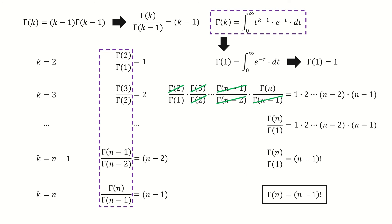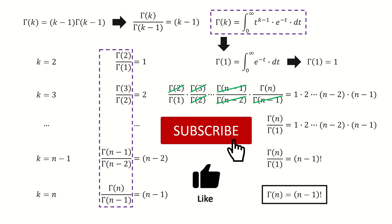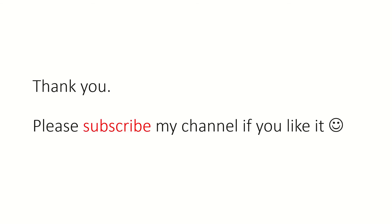So we get this final answer: gamma n equals n minus 1 factorial. Don't forget to subscribe to my channel and give a like. Thank you for watching.